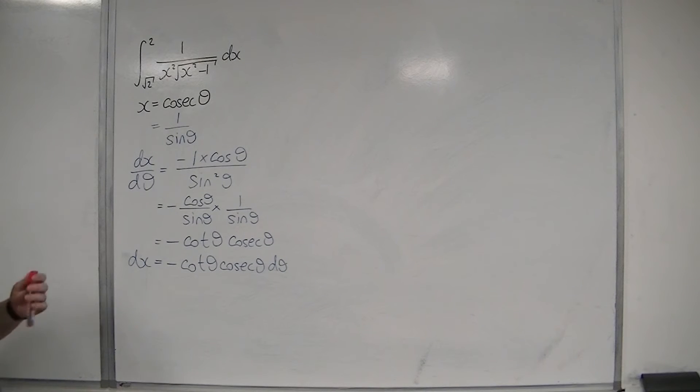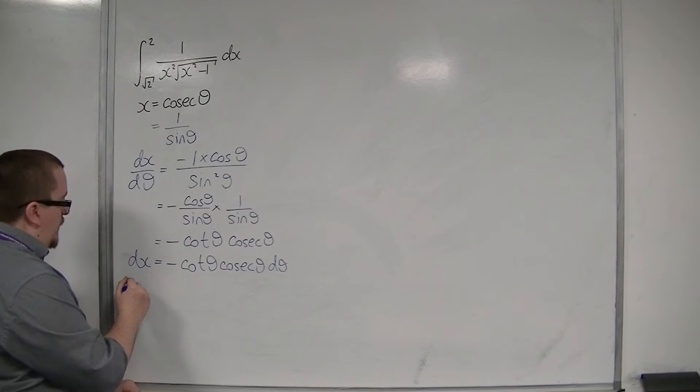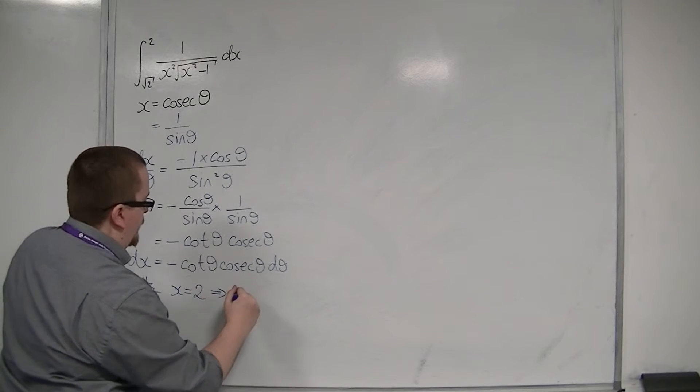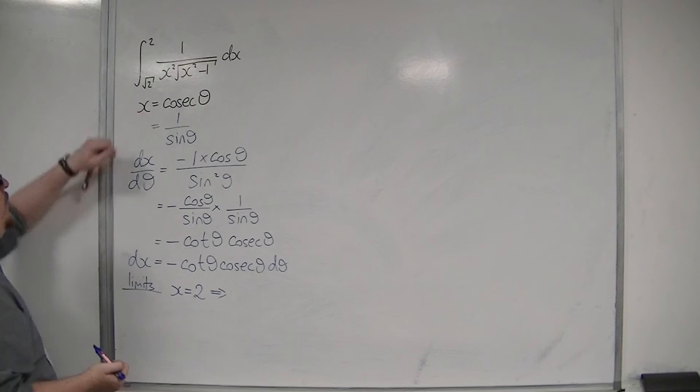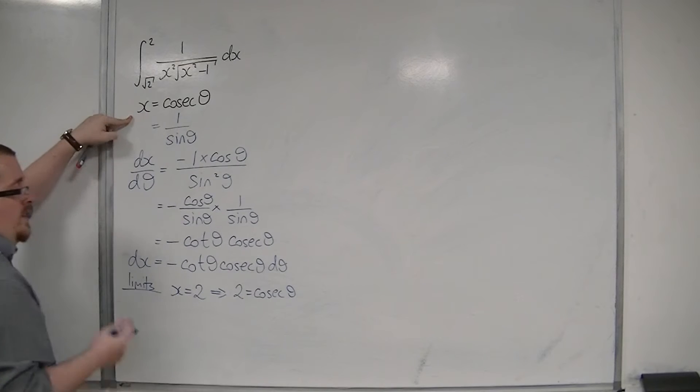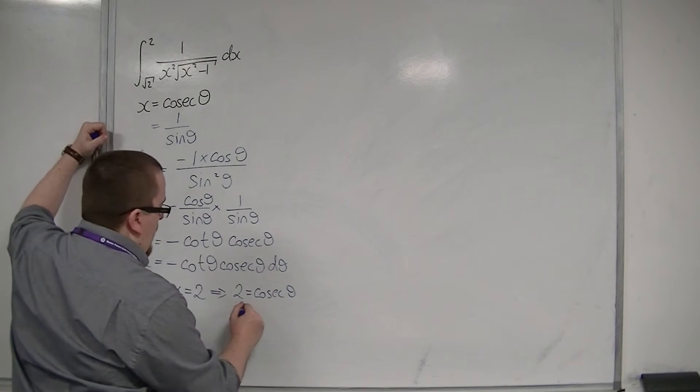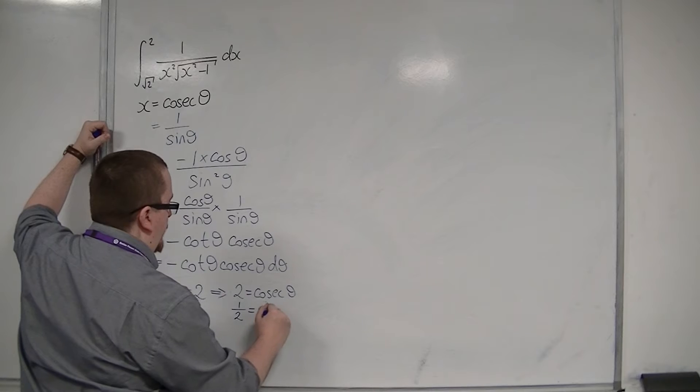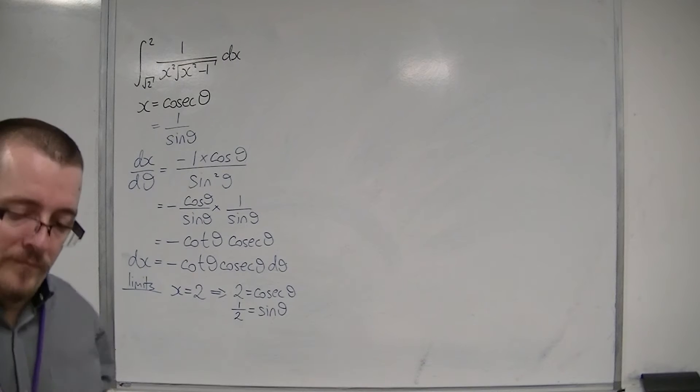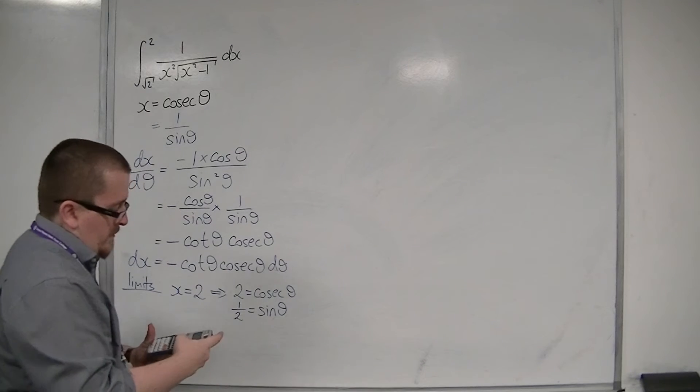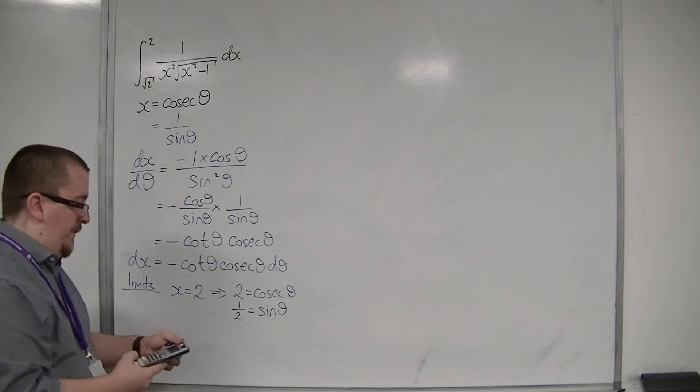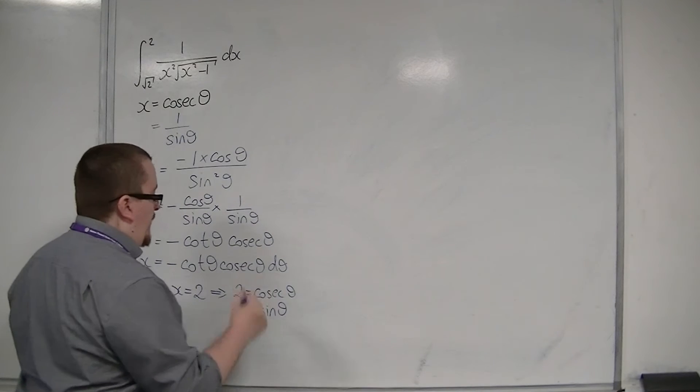I then have limits to change. We're going to change the limits. When x is 2, I have 2 equals cosec theta. Cosec is 1 over sine, so that means that sine is 1 half. Making sure that we're in radians, because all integrals must be performed in radians, I can inverse sine both sides, and so that means that theta is pi over 6.